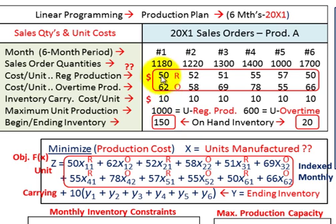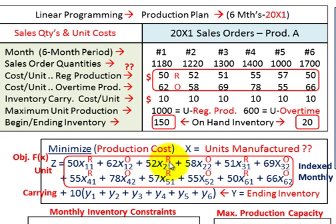For month one we have $50 for every unit in regular production and $62 for overtime production, so we'd have 50 times x11 for regular plus 62 times x12 for overtime production. For the next month it's $52 for regular and $58 for overtime, so we'd have plus 52 times x21 plus 58 times x22. For month three it's $51 and $69, so plus 51 times x31 plus 69 times x32 for overtime production.